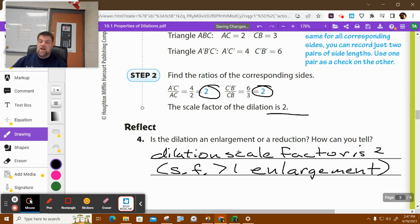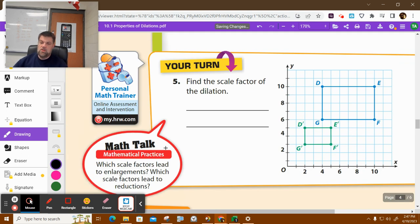Okay. Let's try to do number 5. Number 5, they gave us two rectangles, and they said find the scale factor. Well, we're going to do the same thing. I'm going to go from D to G. So I'm going to go 1, 2, 3, 4.